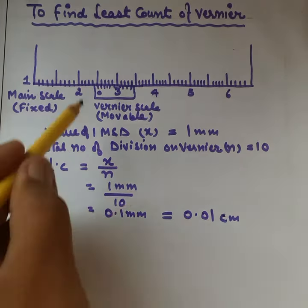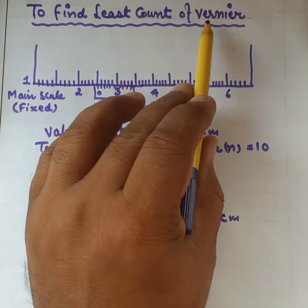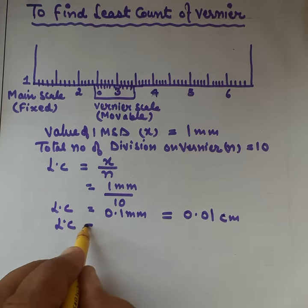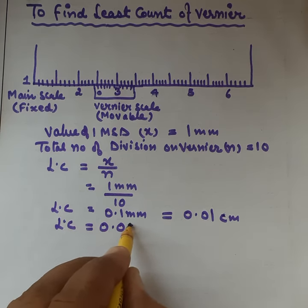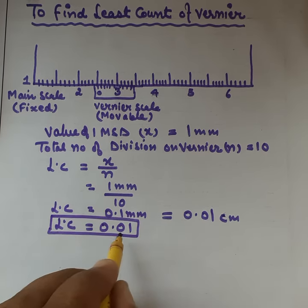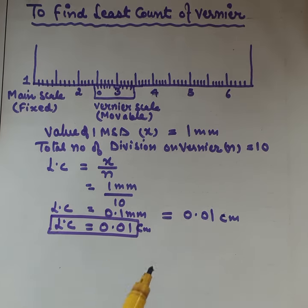This is the way of finding the least count of a vernier. So if the question comes, what will be the least count for vernier, you can say 0.01 cm. This is the way to find out the least count for a vernier caliper. Thank you.